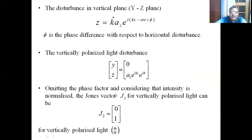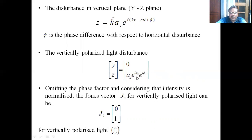Similarly, if we consider vibration in the vertical plane, the displacement is given by an expression with amplitude, an oscillatory term, and a phase difference relative to the horizontal disturbance. The matrix is written with y and z components — since there is no oscillation in the y-direction, y is zero, and the z-direction oscillation carries the phase difference term. After normalization, this reduces to the column matrix [0, 1] for vertically polarized light.